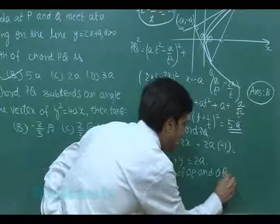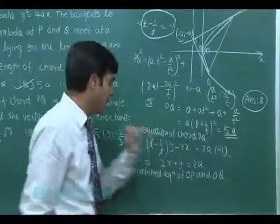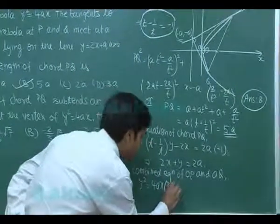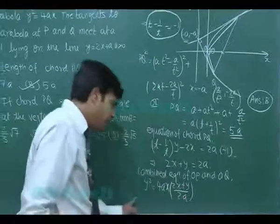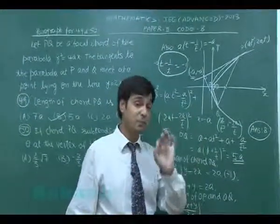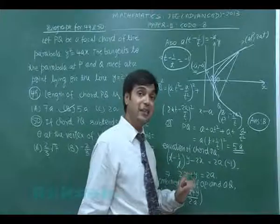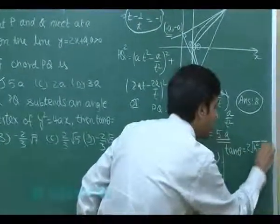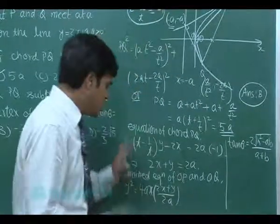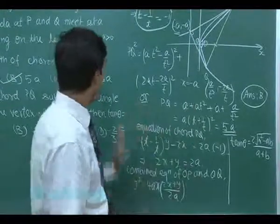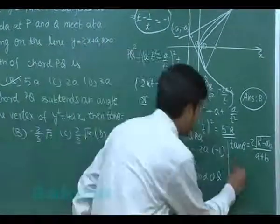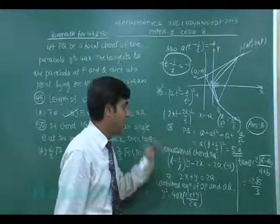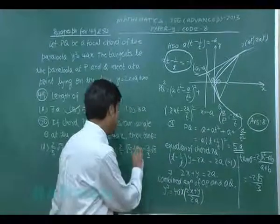The combined equation of lines OP and OQ is obtained by making y² = 4ax homogeneous with the line: y² = 4ax · (2x + y)/(2a). This is of the form ax² + 2hxy + by² = 0. The angle between the two lines is given by tan θ = 2√(h² - ab)/(a + b). Substituting and simplifying gives tan θ = -2√5/3. So option D is the correct answer.